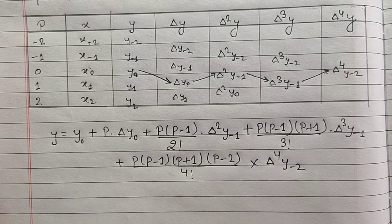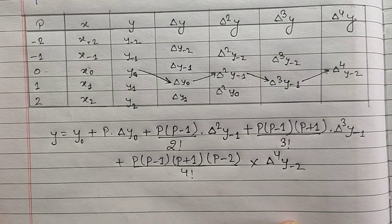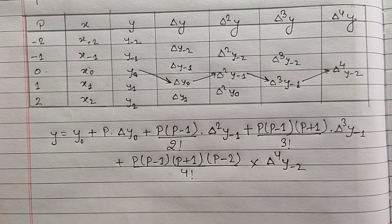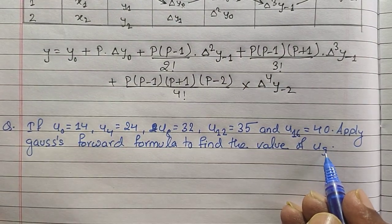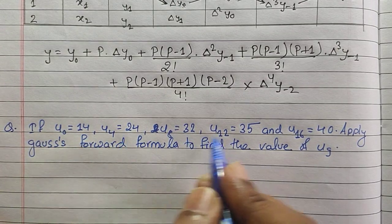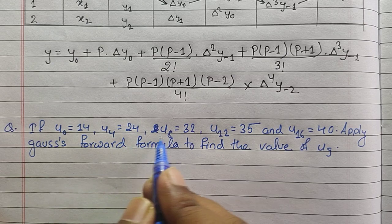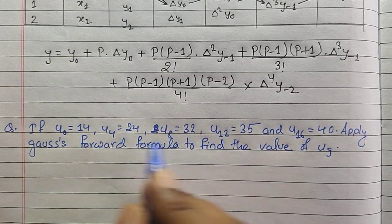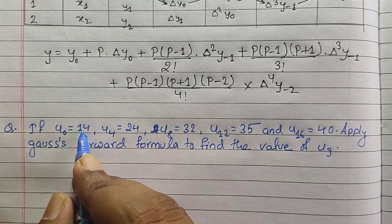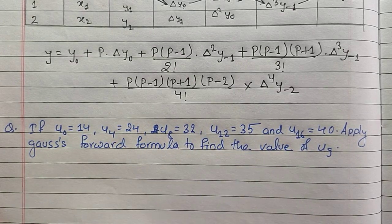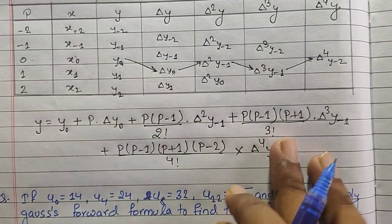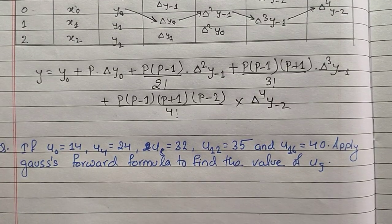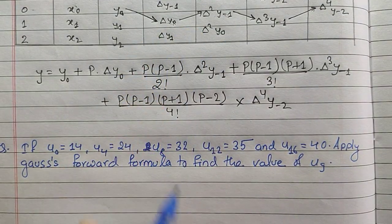I hope you have understood the formula. From the numerical it will be more clear. Here I have selected a numerical in which we are asked to find the value of u9. We are given the values: u0, u4, u8, u12, u16, with corresponding y values of 14, 24, 32, 35, and 40 respectively. Let us draw the table — we need to first find the differences and then use the formula to find the value of u9, which will be the application of our Gauss forward difference formula.